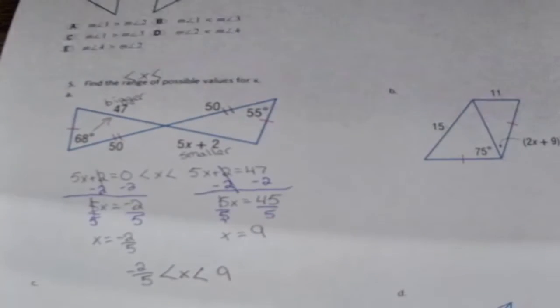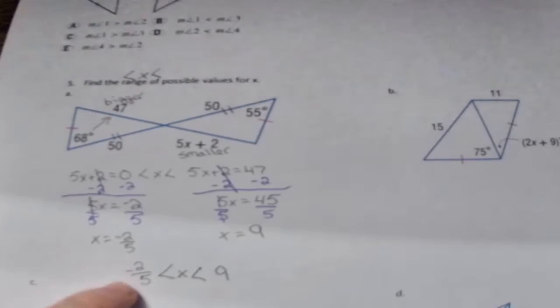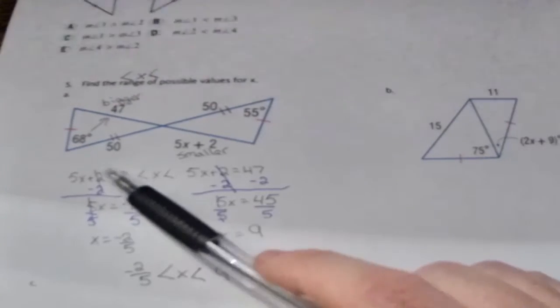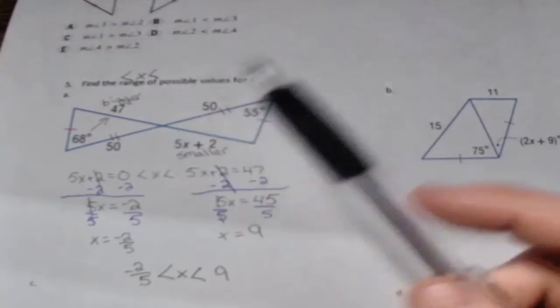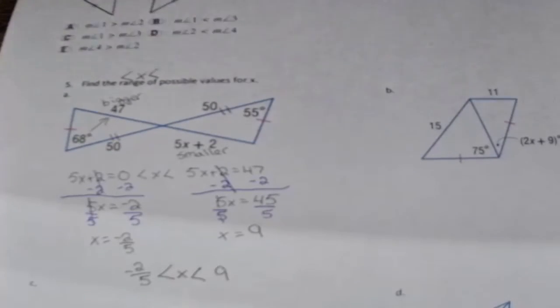So the variable x can be any number in between negative 2 over 5 and 9. Now a little hint for you is that the left side, when we set it up for what the smallest value potentially can be, it's almost always going to just be equal to zero. So that's a little hint for you whenever you're doing these types of problems.